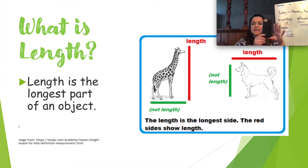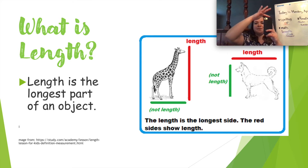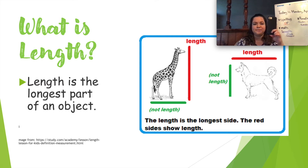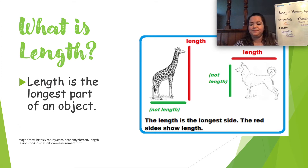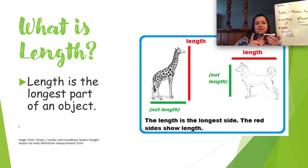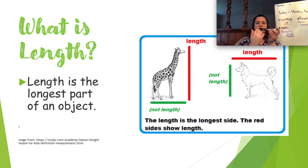If I'm looking at my cell phone right now and I wanted to know which part was the length, would the top side be the length, or would the side part be the length? The side part, correct? Because this is the longest part — therefore, this is the length. Same thing with a marker: the length would be the longest side, not the short side.